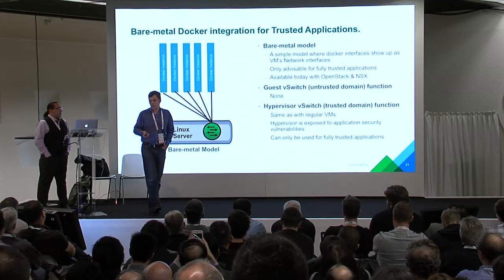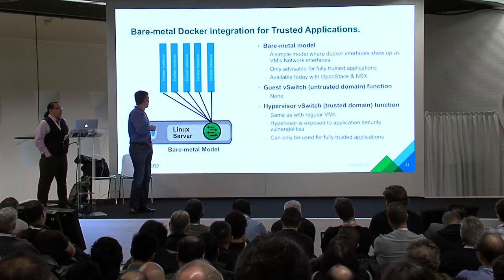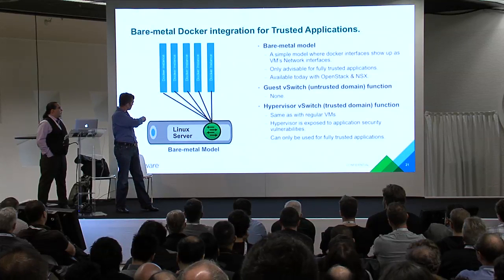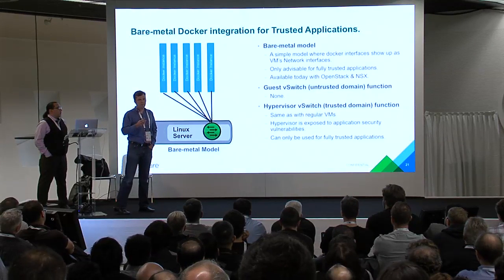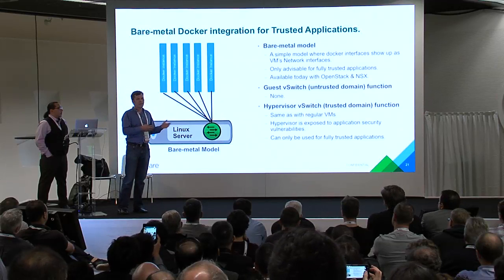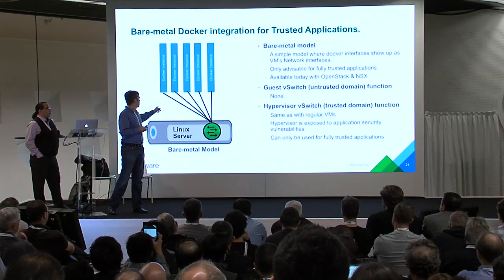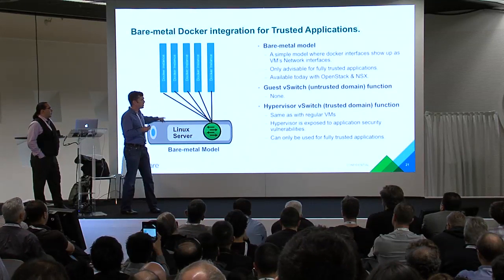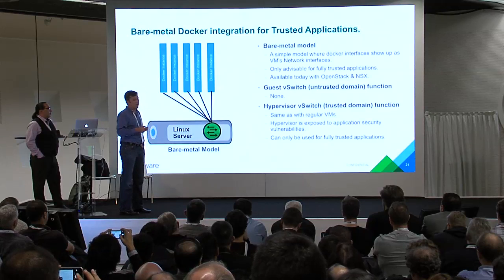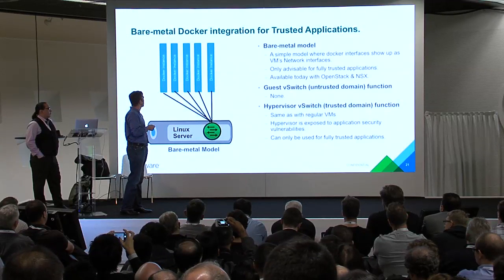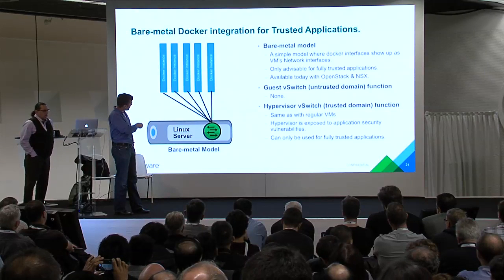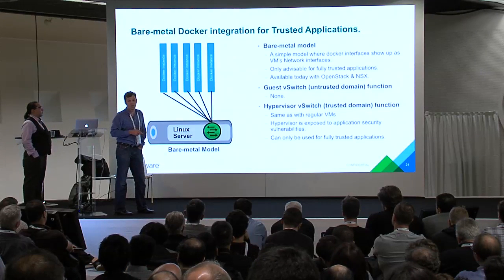The first model is running Docker on bare metal. The different Docker instances are connected via veth interfaces into OVS — that's the green circle. To OVS, these just look like interfaces. We associate information from the cloud management system identifying what the other end of those veth interfaces are attached to, and OVS sends that information to NSX so you can implement your policies. This is supported already. We'd recommend that these different Docker instances are in the same security domain, because if one of them breaks out, it could affect traffic for the others in that green switch.